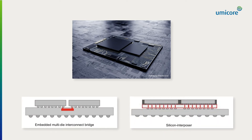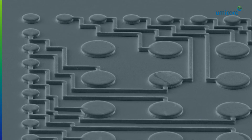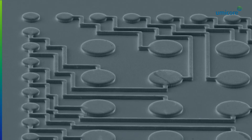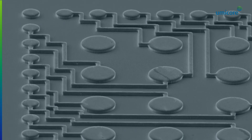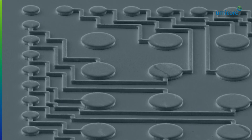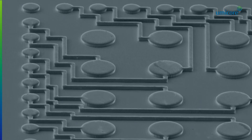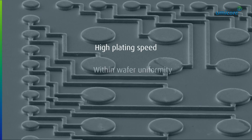This is enabled by through-silicon vias, scaled micro bumps, and copper redistribution layers. Umicore has a unique plating electrolyte containing designer copper additives, which allow plating of multiple patterns with various pattern densities in one step, with high plating speed, good within-wafer uniformity, and good shape control.